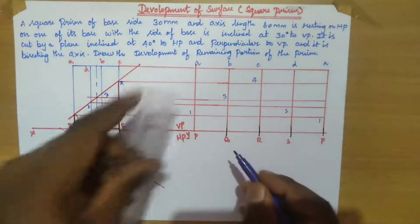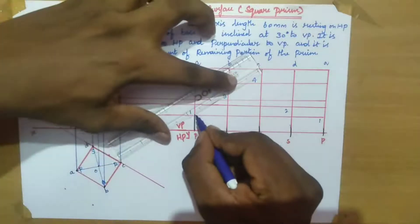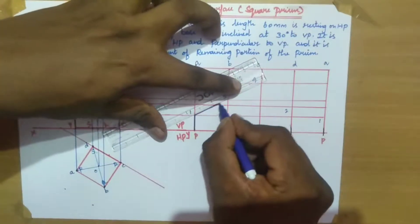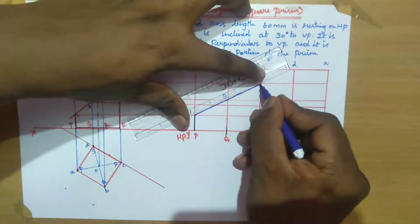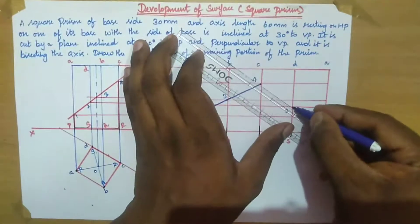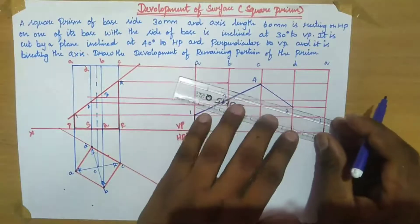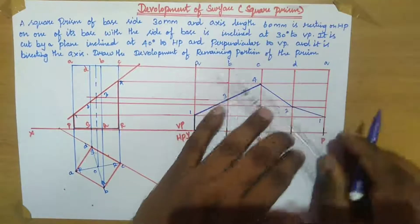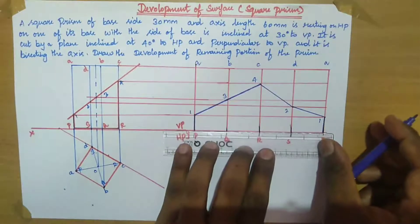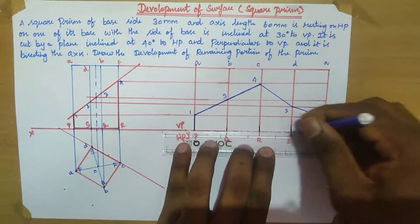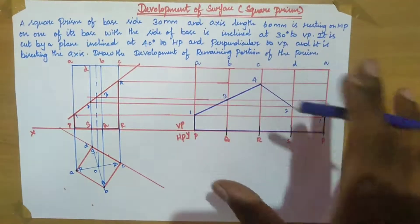Now join all the points in order to develop the remaining portion of the prism. Join from P to 1, again join from 1 to 3, again join from 1 to 4, again join from 4 to 2, again join from 2 to 1. Now darken the retainable position in order to develop the remaining portion of the prism. This is the remaining portion of the prism. This is the square prism surface development.